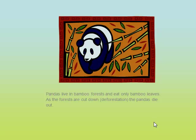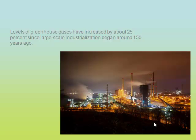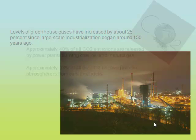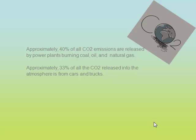A habitat contains hundreds of food chains that combine in a network called a food web. Sadly, organisms that depend on a single food source will starve if that food source disappears. The burning of fossil fuels, such as coal and oil, as well as deforestation, have caused the concentration of greenhouse gases to increase significantly in our atmosphere, contributing to global warming. Approximately 40% of all carbon dioxide emissions are released by power plants burning coal, oil, and natural gas to provide for human needs and desires.